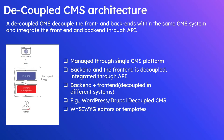The next one is decoupled CMS architecture. A decoupled CMS decouples the front end and back end within the same CMS system and integrates them through API. As you can see in this diagram, the decoupled CMS keeps them in the same system but the front end and content management are decoupled through API. Authors manage the content, then the front end consumes the content through API, and the HTML is accessed by the web browser.